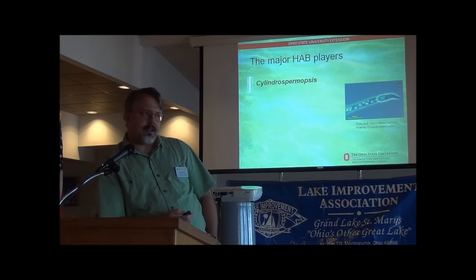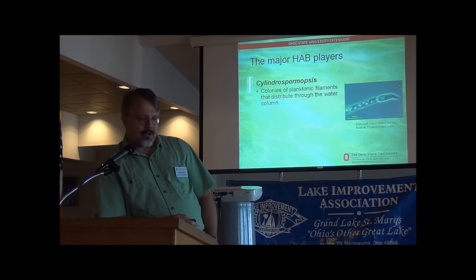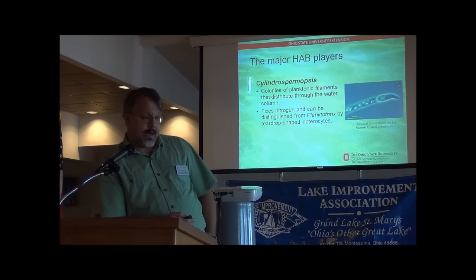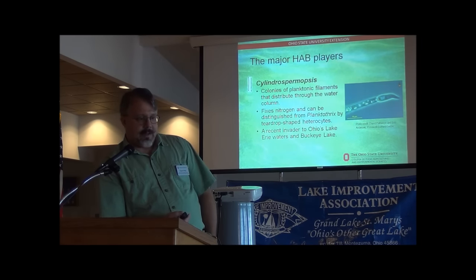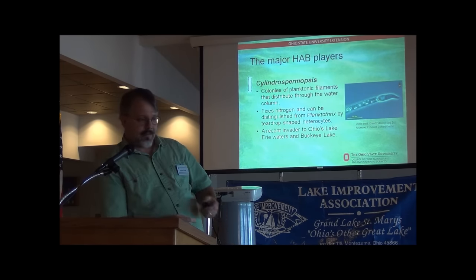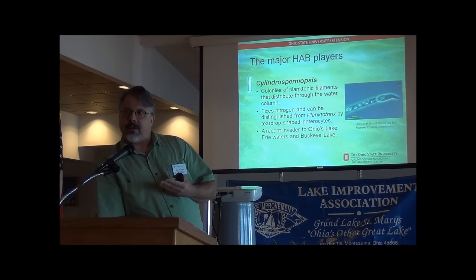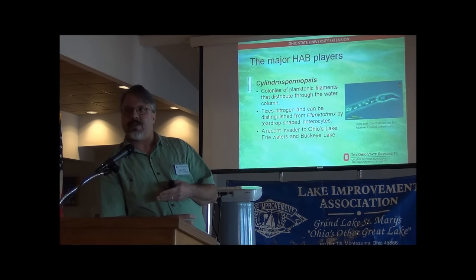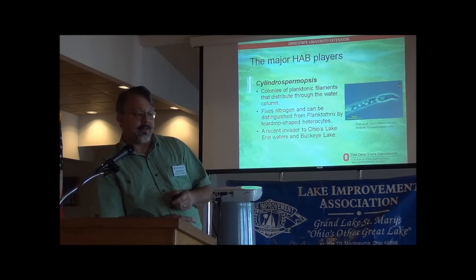Cylindrospermopsis is a recent invader that has its own toxin named after it that the EPA actually tests for. These are planktonic, a lot like Planktothrix — they just distribute through the water and make it generally green. They can fix nitrogen, and you can distinguish them by the shape of their heterocytes under a microscope. Only recently described in Ohio, it was first detected in Buckeye Lake and is now quite common there, so it wouldn't be a stretch to imagine it getting into many reservoirs around Ohio.